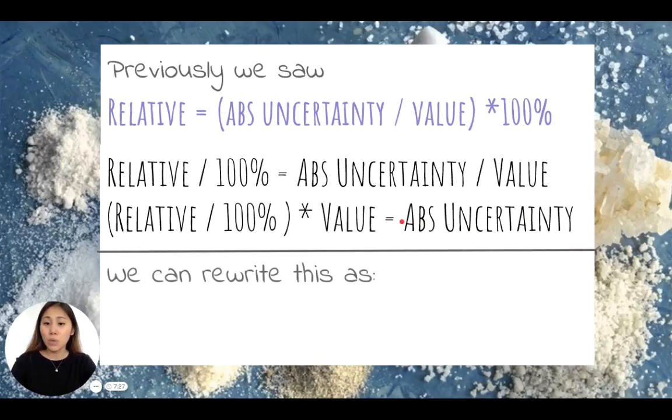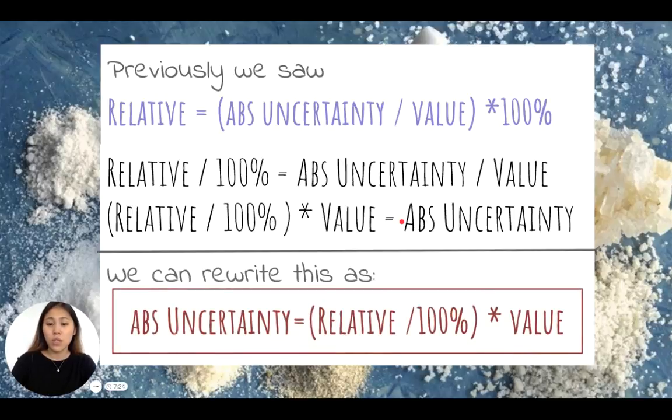Now we can rewrite this equation as: absolute uncertainty equals relative uncertainty divided by a hundred percent, multiplied by value. So here you can see the equation was written for relative uncertainty, and we just rewrote this equation for absolute uncertainty.